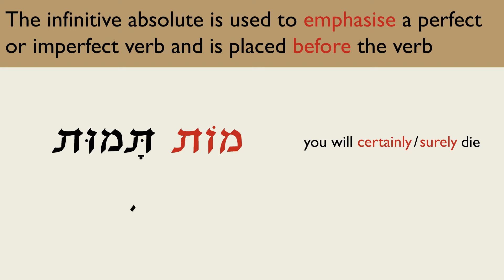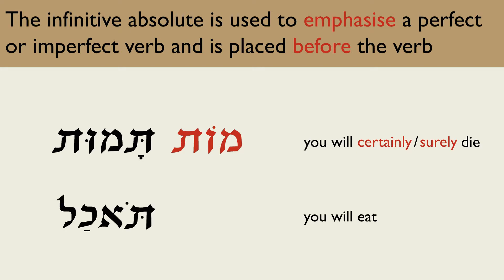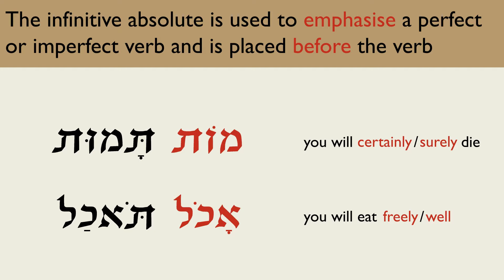The imperfect verb means 'you will eat.' When the infinitive absolute is placed before it, the translation changes to 'you will eat freely' or 'you will eat well.' Many English adverbs can be used to translate this kind of infinitive absolute, as long as the verb is emphasised.